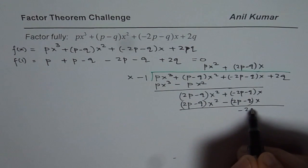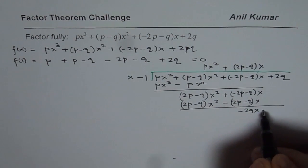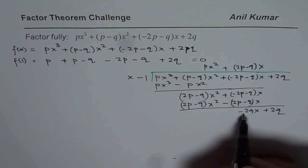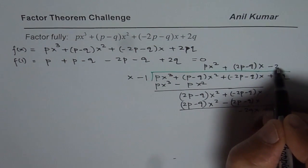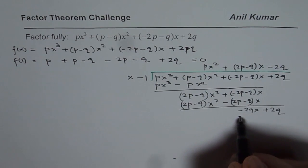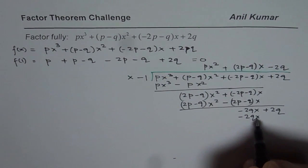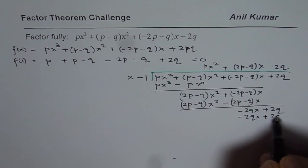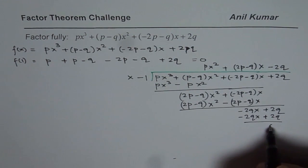So we get (2p-q)x² - (2p-q)x. So when you take away, you get this is minus, -2p - 2p is 0, and -q minus and minus becomes plus. So it gives you -2q.